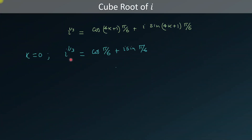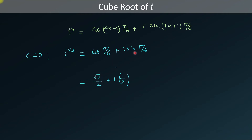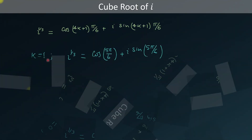When k = 0, it will give one of the cube roots of iota. We put k = 0 in the equation and we get iota to the one-third is equal to cosine(π/6) + i·sine(π/6). We already know that cosine(π/6) = √3/2 and sine(π/6) = 1/2. So this is one of the cube roots of iota.